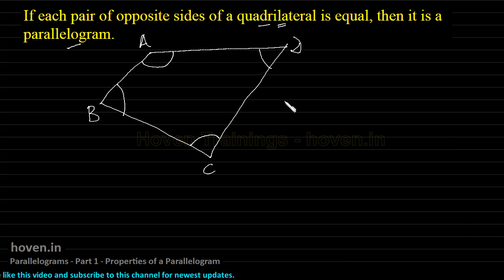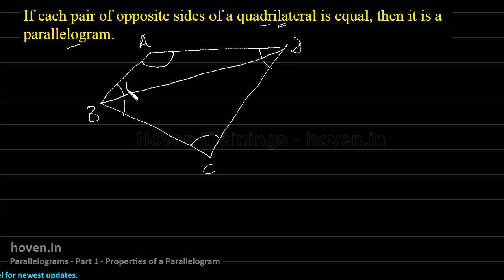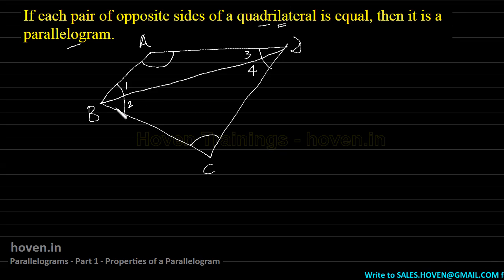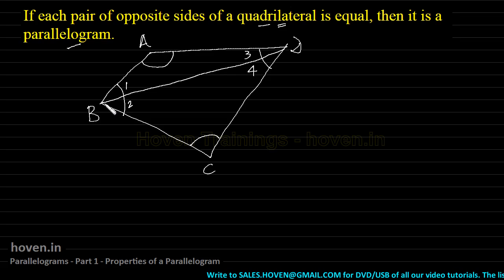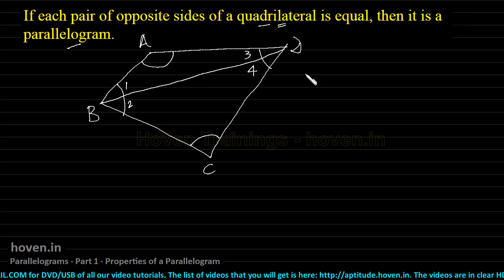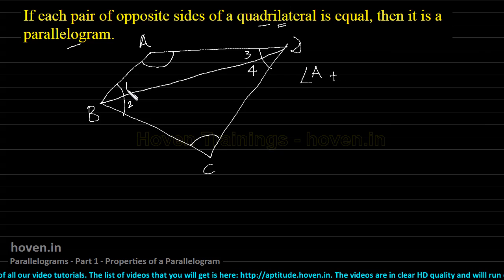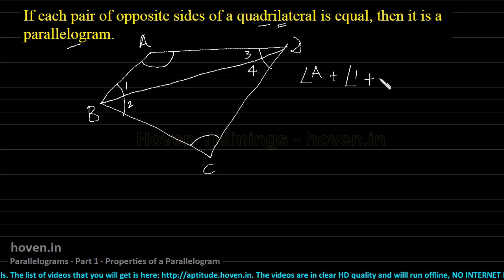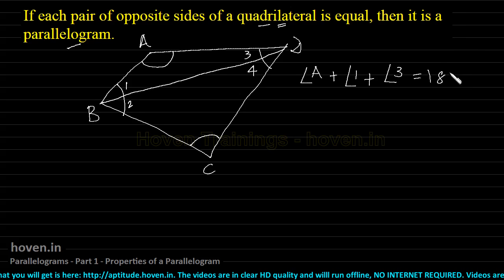We can prove this. For this, let us join B and D together. This angle can be labelled as 1, this angle as 2, this angle as 3, and this angle as 4. Now we can see that this quadrilateral is composed of two triangles. The second triangle is BCD and the first triangle is ABD. We can apply the angle sum property to each of the triangles. So angle A plus angle 1 plus angle 3...